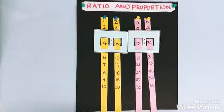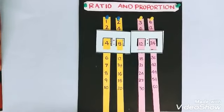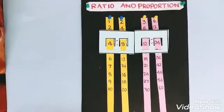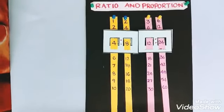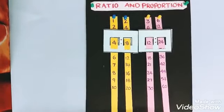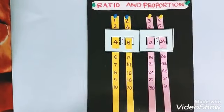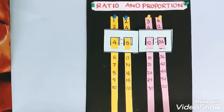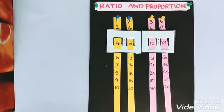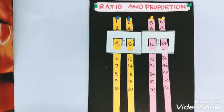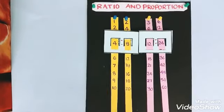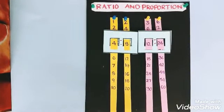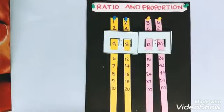Hello guys, today's topic is ratio and proportion. First of all, ratio is nothing but a fraction in which one quantity is with respect to the other quantity. Ratio is the numerator by denominator. The numerator is known as the antecedent and the denominator is called the consequent.